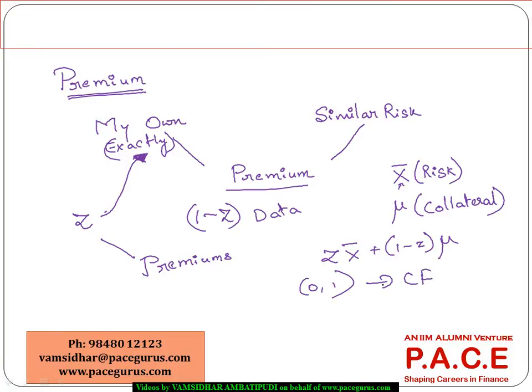And you can very comfortably explain this concept even to a layman because X bar is representing your own data, mu is representing the external data. And the more and more experience you are in the business, this Z will be much highly weighted. The more and more you are new into the business, probably you would rely more and more on external or collateral. That's a better word that is used here because here we are referring to a risk which is similar to but not necessarily exactly the same.